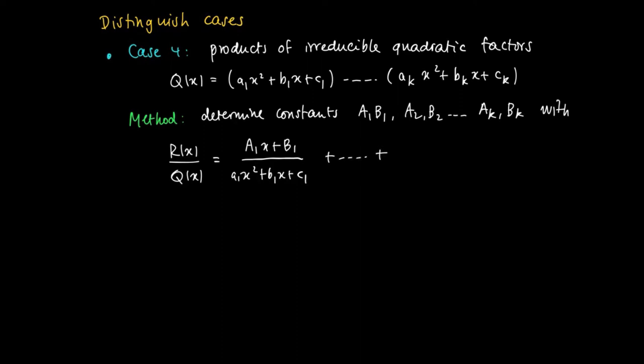Plus, and now we do the same thing for each quadratic factor, until we have the kth one. So the final one we try to write is ak times x plus bk, divided by ak x squared plus bk x plus ck.